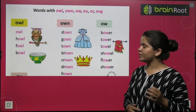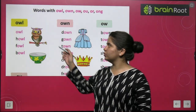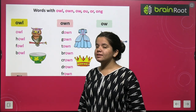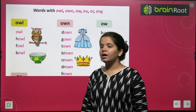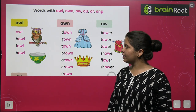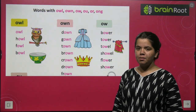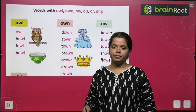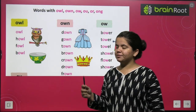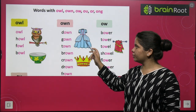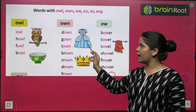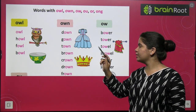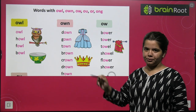Okay, so now we will see OWL words: howl, fowl, and bow — which we also call bowl. OWL words: town, gown, town, brown, crown, ground, frown.